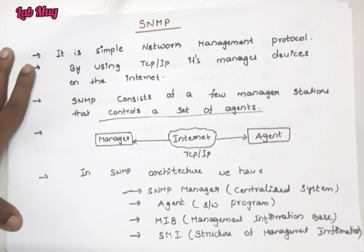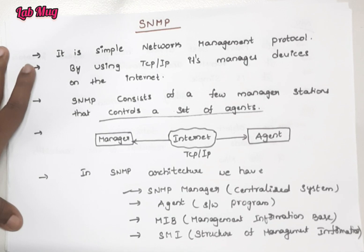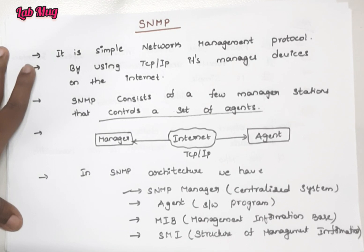The role of SMI, that is Structure of Management Information, and the role of Management Information Base are based on management information. SMI defines general rules based on objects and includes different types of objects, for example specifying length and size.